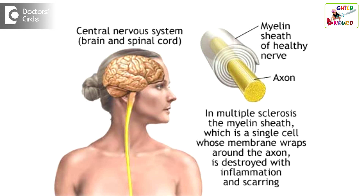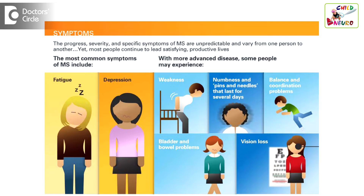Multiple sclerosis is usually less common in children compared to adults. It is more common in females compared to males. The common presenting complaints are weakness of one side of the body, or sometimes weakness of both the lower limbs, which can be associated with problems with urine and stools. Sometimes they can also present with sudden onset of vision loss in one eye or sometimes both eyes. Rarely, they can present with convulsions, that is fits.